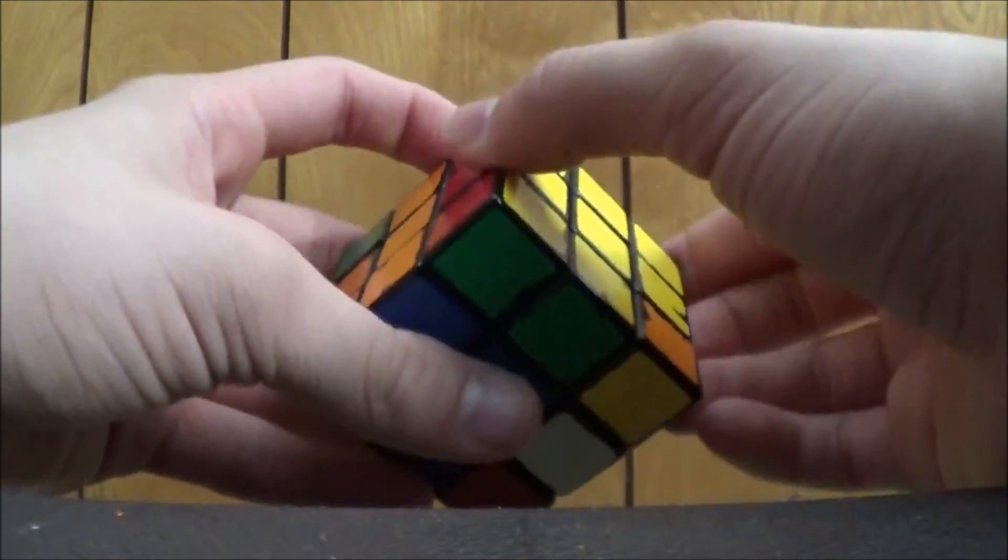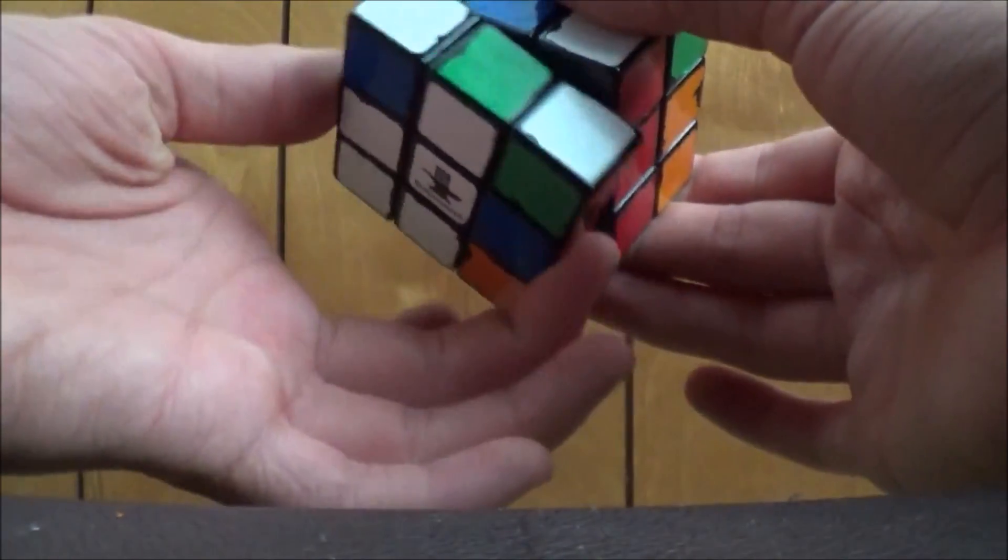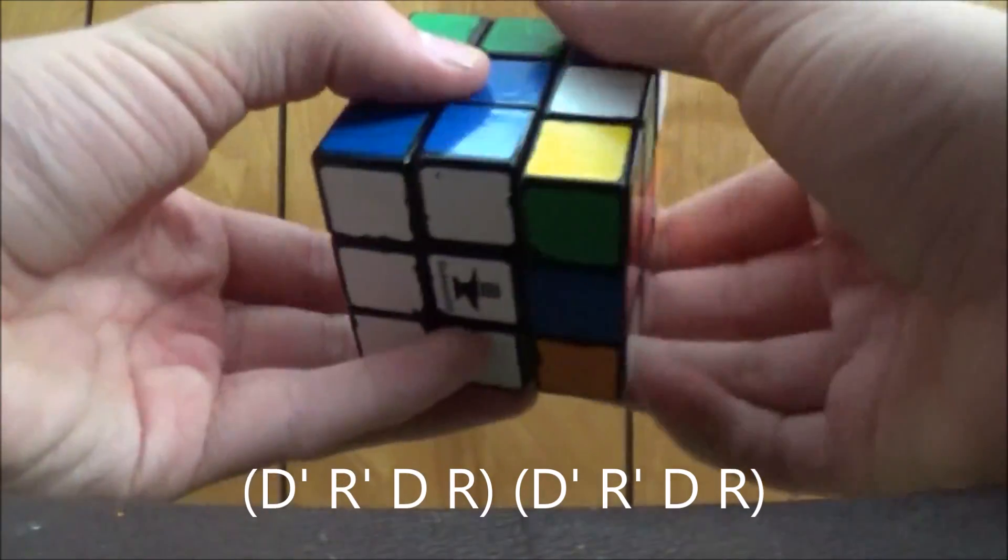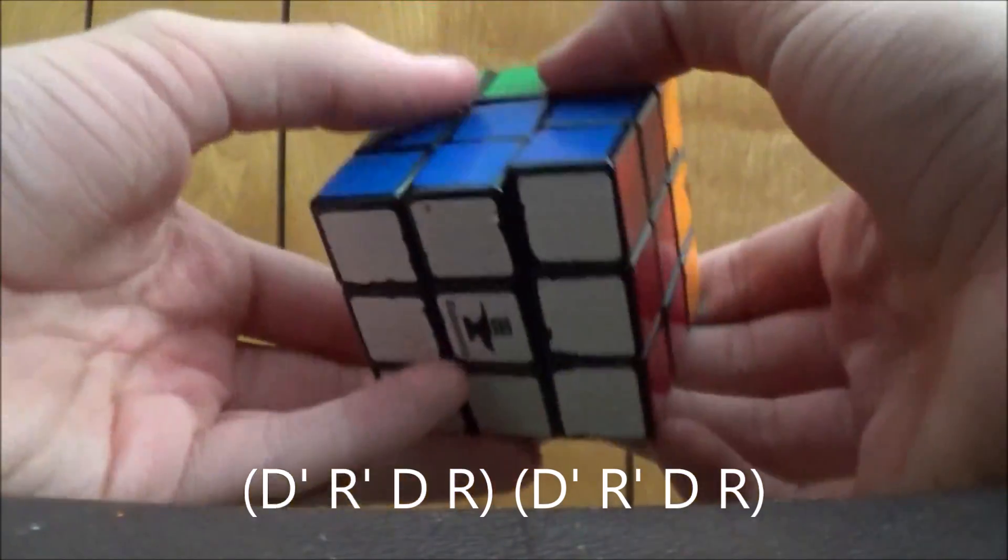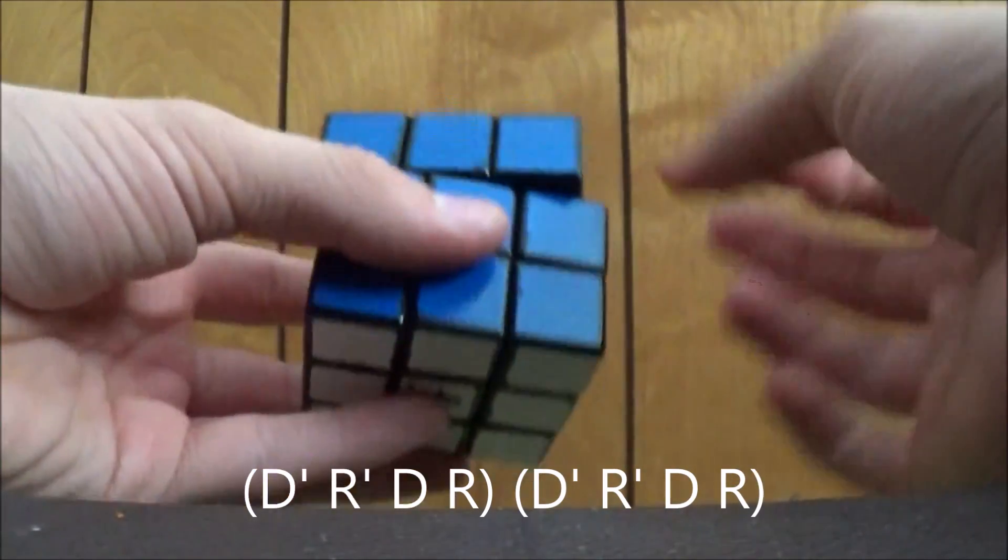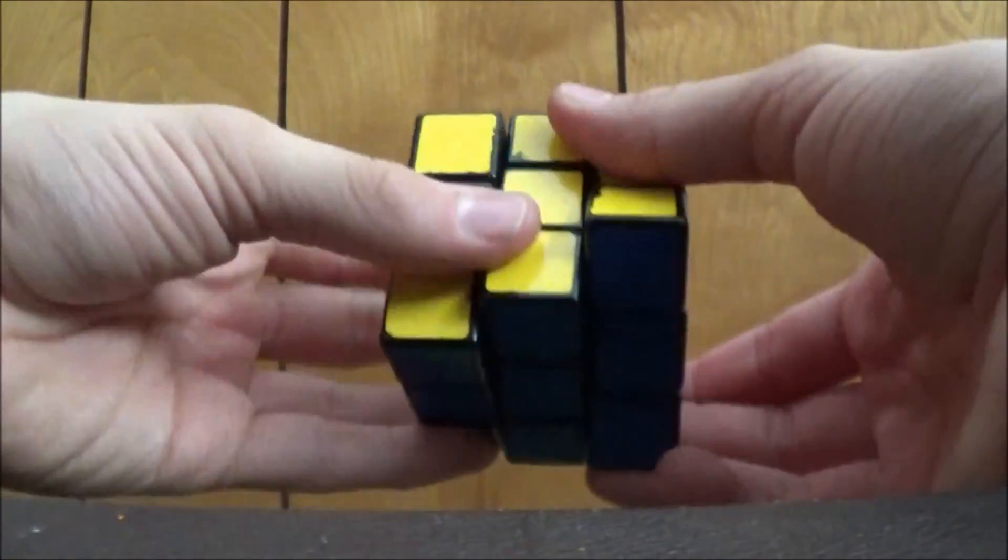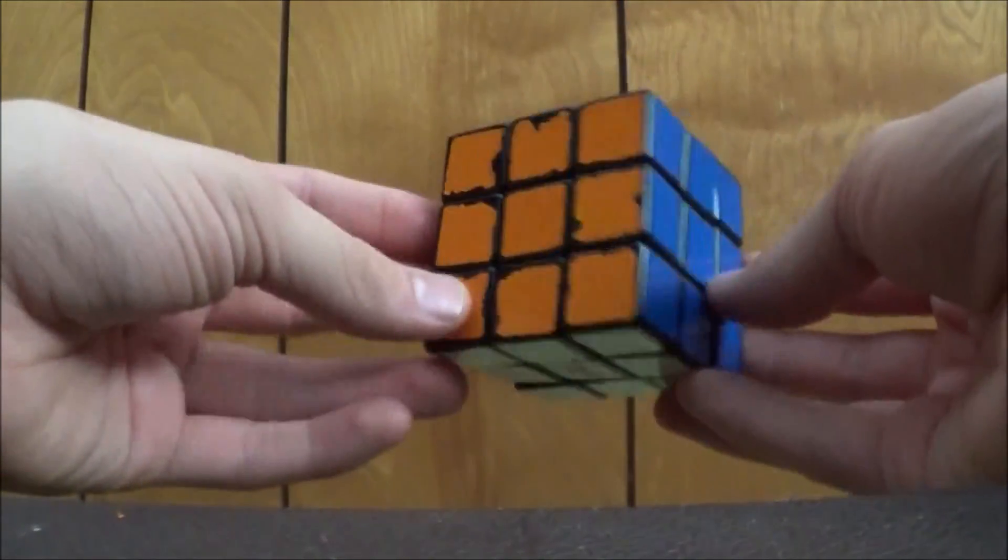Rotate the top once more. Remember, D prime, R prime, D, R, D prime, R prime, D, R. These layers will solve themselves back to normal, and you will have a solved cube. And that is exactly how it is done with shortcuts.